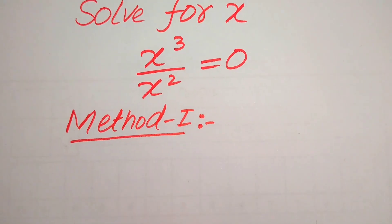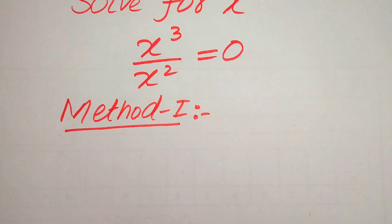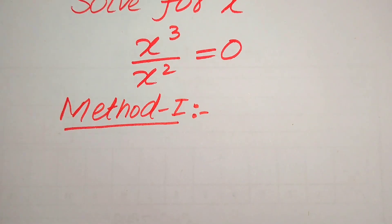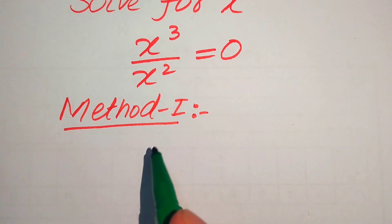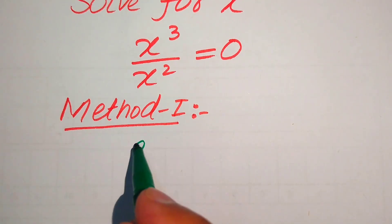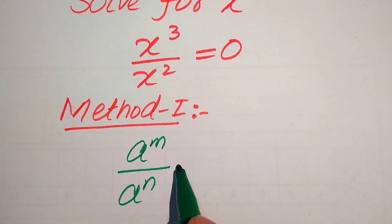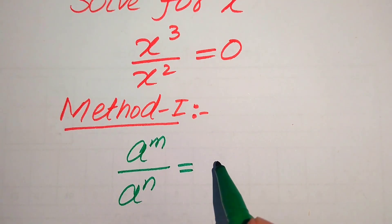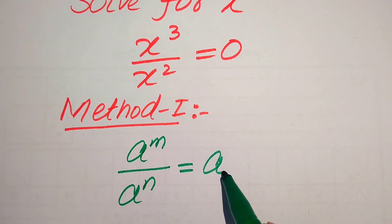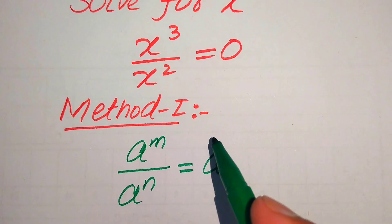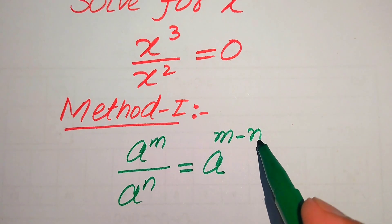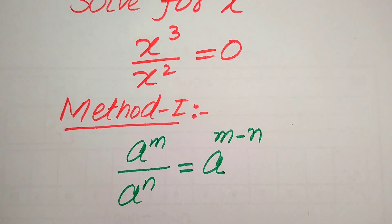In the first method we need to use the exponent law. You know that if we have a to the power of m divided by a to the power of n, it equals a to the power of m minus n.